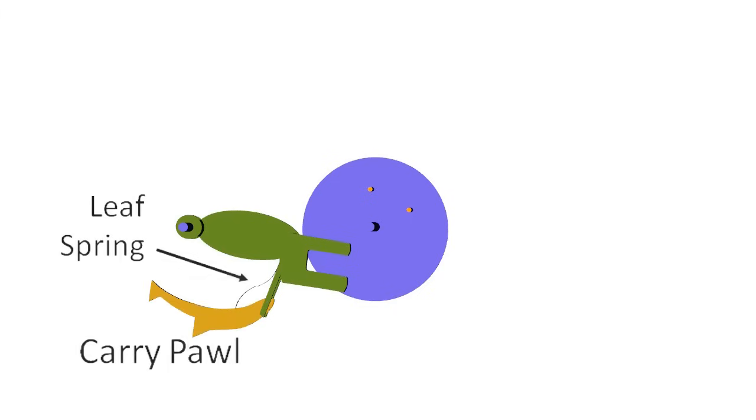The carrying mechanism consists of two pins mounted on the back of the accumulator, a heavily weighted lever mounted on the axle of the accumulator belonging to the next higher order digit, and a spring loaded pawl.